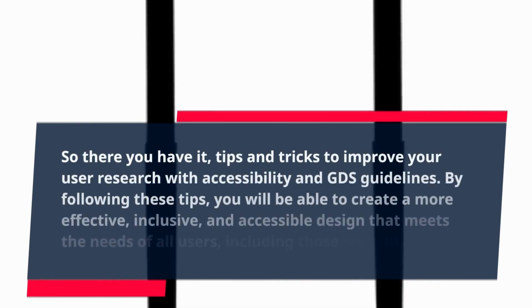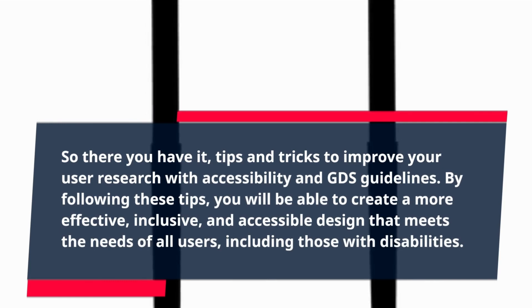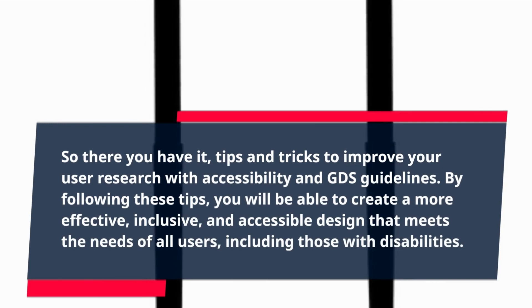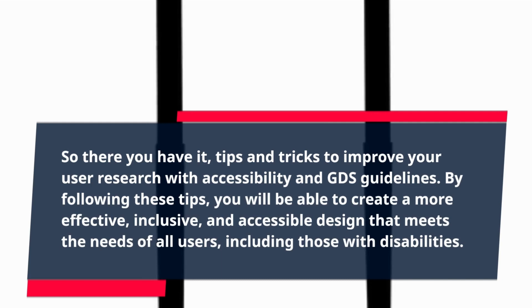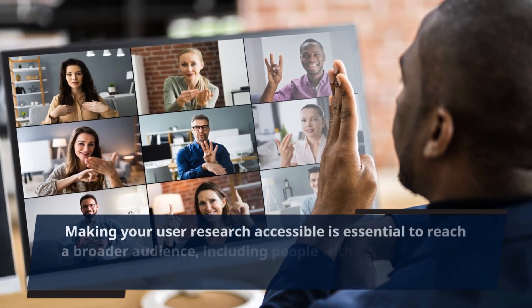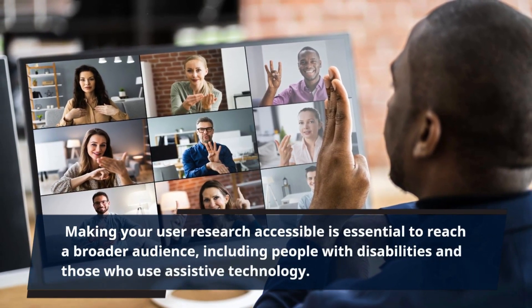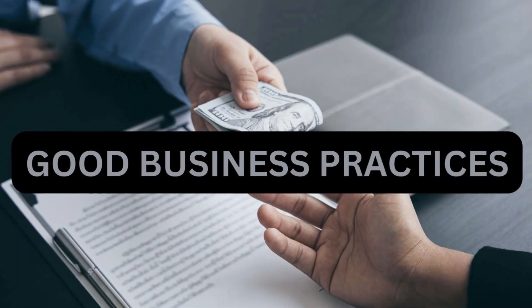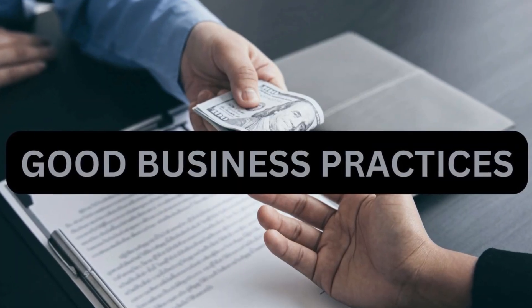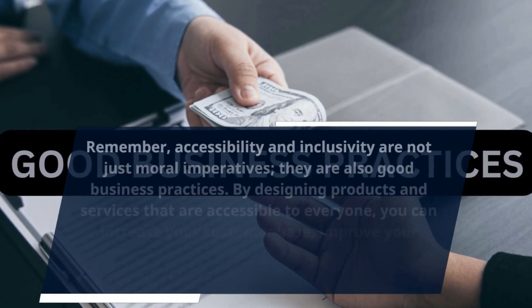So there you have it — tips and tricks to improve your user research with accessibility and GDS guidelines. By following these tips, you will be able to create a more effective, inclusive, and accessible design that meets the needs of all users, including those with disabilities. Making your user research accessible is essential to reach a broader audience, including people with disabilities and those who use assistive technology. Remember, accessibility and inclusivity are not just moral imperatives — they are also good business practices.